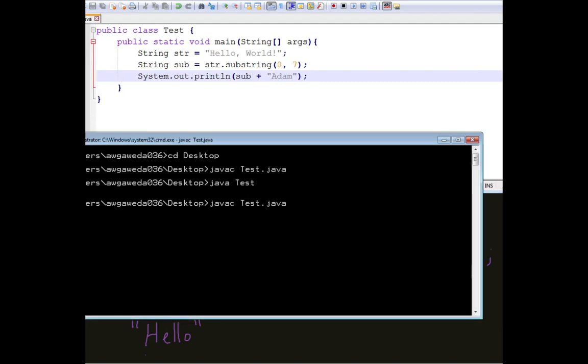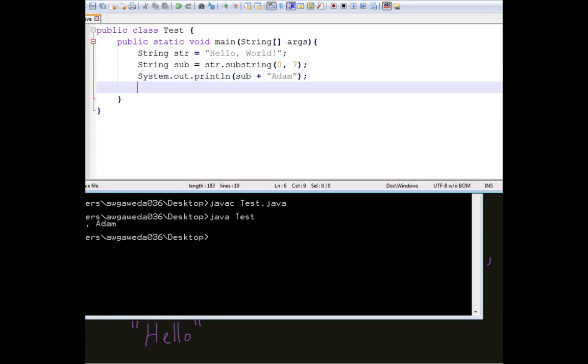Compile it up, java test, look what happens, I've taken now a substring and then through something called string concatenation, I can take the word hello comma comma with a space and then add whatever I want afterwards, pretty sweet.